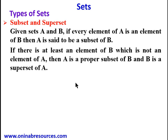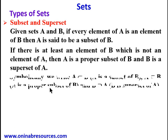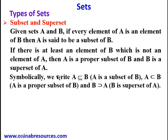Looking at the symbolic representation: A ⊆ B means A is a subset of B. A ⊂ B means A is a proper subset of B. And B ⊇ A means B is a superset of A.